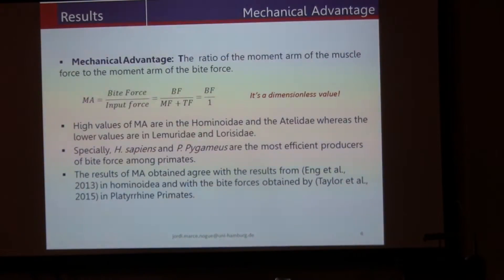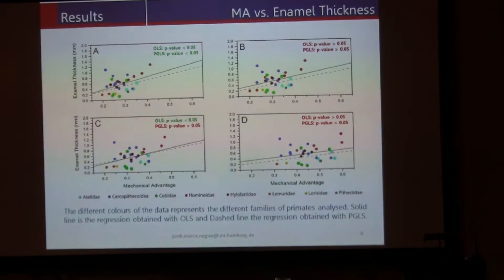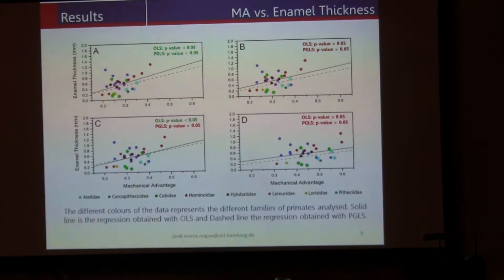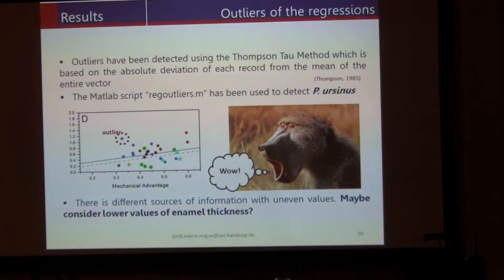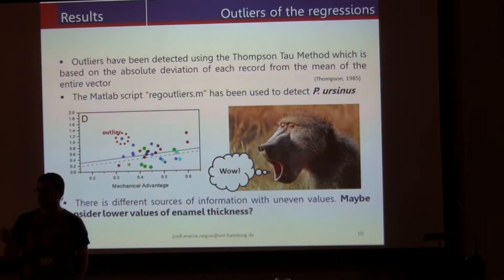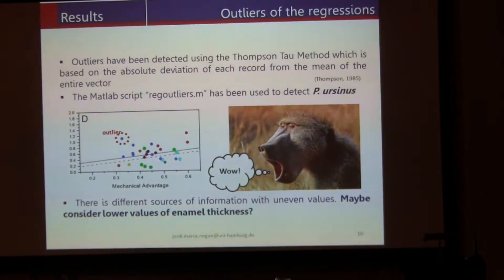The results I am getting here are more or less similar to others you can find in the literature, and I am quite confident with these values. What I am doing is correlating the mechanical advantage with the enamel thickness. You can see that in this case there is a correlation — the p-value both in the ordinary and the phylogenetic regression is okay — but in the r-squared we are having some problems. I was wondering what was happening, and I realized that there was an outlier. I used a script to detect the outlier using what is called the Thomsen-Tow method — you need a mathematical method to check where the outlier is.